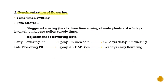Coming to synchronization of flowering, we ensure that the flowering periods of both male and female plants are synchronized so there is more seed set. There are two efforts for this. The first is staggered sowing, where the male parent is sown 2 to 3 times at 4 to 5 day intervals to increase pollen supply time. The second is adjustment of flowering day: for early flowering plants, spray 2% urea solution to delay flowering by 2 to 3 days; for late flowering plants, spray 2% DAP solution to achieve 2 to 3 days early flowering.